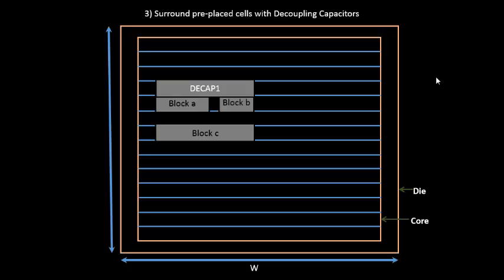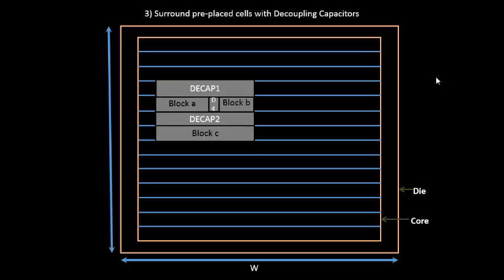Concretely, we place decap1 at the top of block A and block B, decap4 between block A and B, decap2, and decap3 — surrounding and encapsulating the blocks with decoupling capacitors. These decoupling capacitors act as a coupling element between the blocks and the power supply, so the blocks no longer depend completely on the main power supply. This is covered in greater detail in the crosstalk videos.